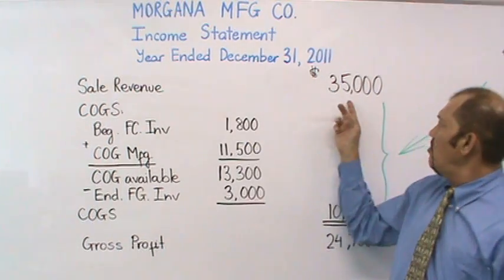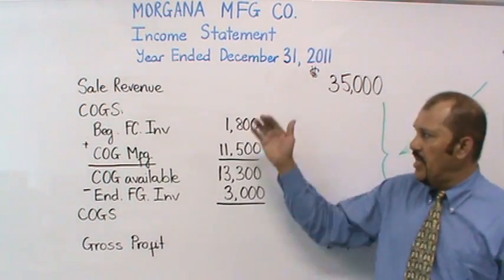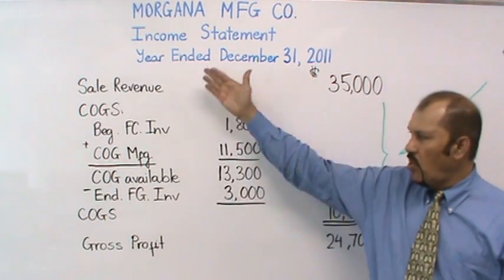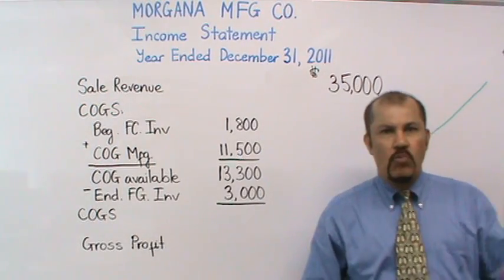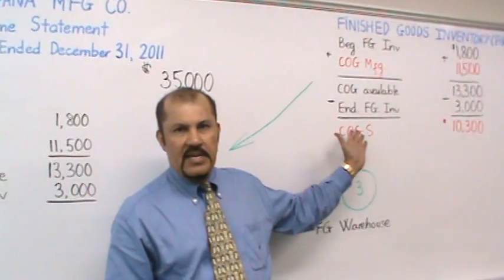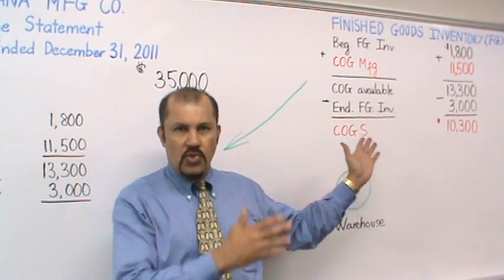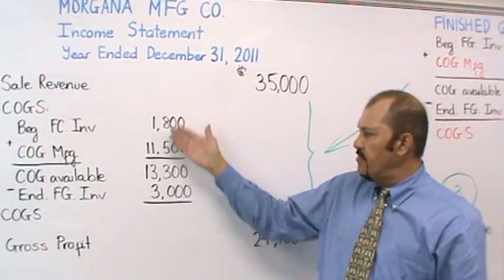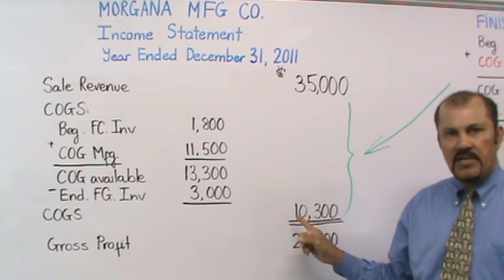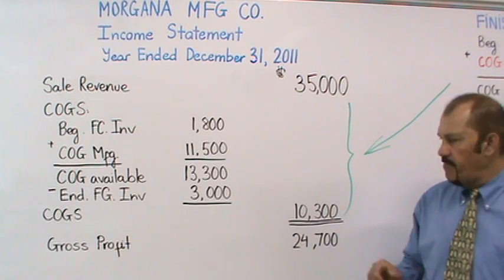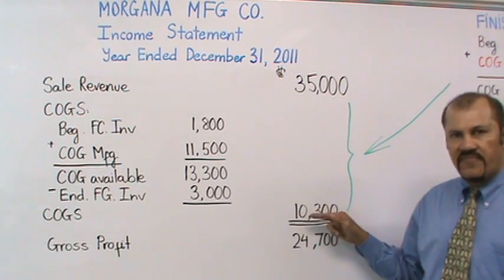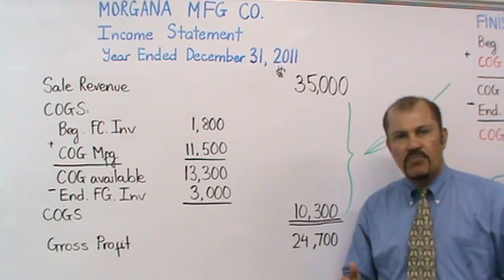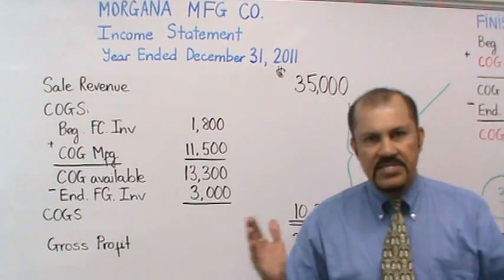We have sales revenue of $35,000, and then from the sales revenue we subtract our cost of goods sold. The cost of goods sold calculation is basically what we had done earlier in part one. Those same calculations are now transplanted into our income statement — the same $10,300 cost of goods sold. So when you subtract your cost of goods sold from your sales revenue, you end up with a gross profit of $24,700.